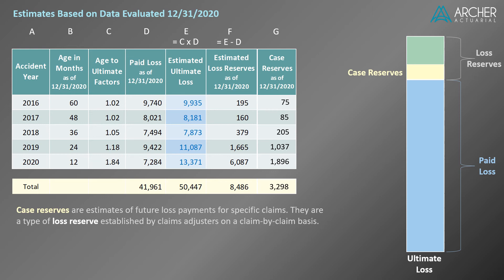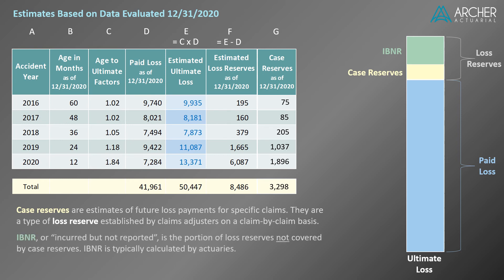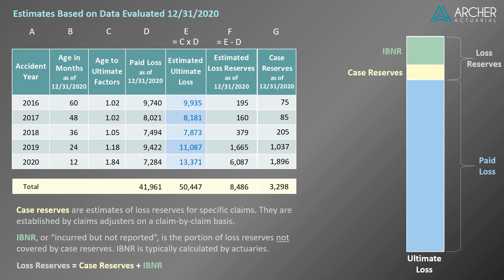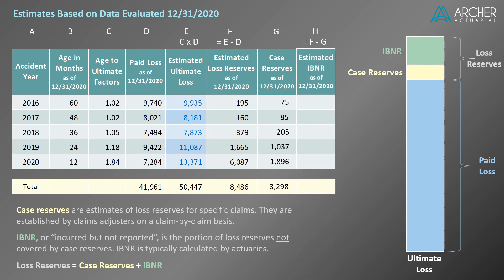Let's refine our bar graph to include case reserves and IBNR. As we mentioned, case reserves are a type of loss reserve. The remaining portion of the loss reserve is called IBNR. IBNR, or incurred but not reported, is the portion of loss reserves not covered by case reserves. IBNR is typically calculated by actuaries. As suggested in our bar graph, loss reserves equal case reserves plus IBNR. Let's calculate the IBNR in our example — it equals the estimated loss reserves as of 12/31/2020 minus the corresponding case reserves.